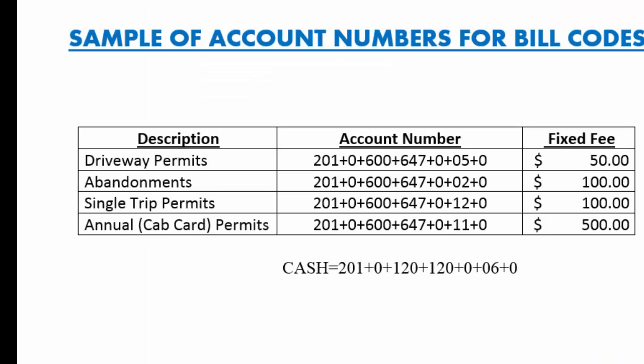In order to make cash receipting quicker and more efficient, I'm going to show you how to set up bill codes. Bill codes are quick codes you can use for reoccurring items you sell, such as permits. For receipting clients you invoice for, you would need to use Payment Post — we will show you how to use that in a different video.